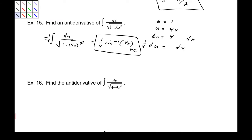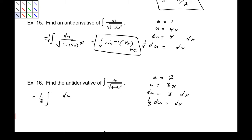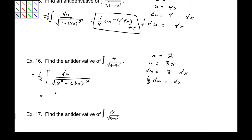Number 16: find the antiderivative of this function. So first, a is 2. And u — what is being squared there — is the 9x squared, so u equals 3x. Which makes du equal to 3 dx, or dx equals 1/3 du. So I am going to rewrite this as 1/3 du over the square root of 2 squared minus 3x squared. Which, based on our formula, is going to be 1/3 arc sine of u over a — that's 3x over 2 — plus c.